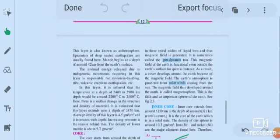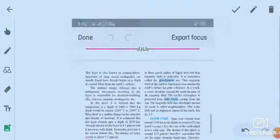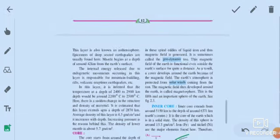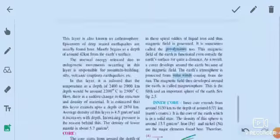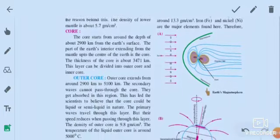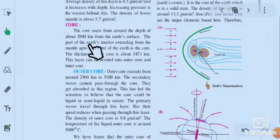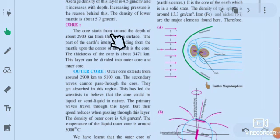Continue the next point: core. The core starts from around the depth of about 2900 kilometers from the earth's surface. The part of the earth's interior extending from the mantle up to the center of the earth. The thickness of the core is about 3471 kilometers. This layer can be divided into an outer core and an inner core.